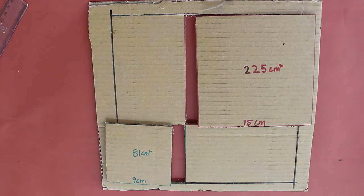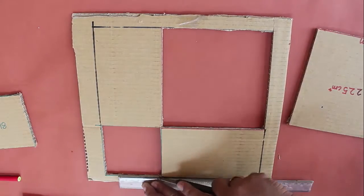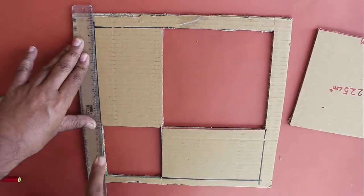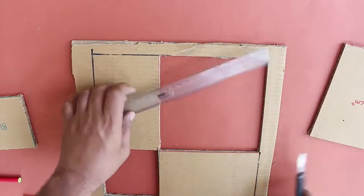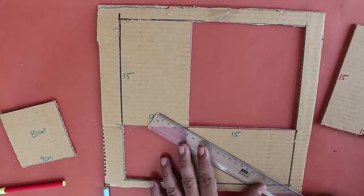After cutting the two large squares of 15 and 9 centimeter inside, we are left with two rectangles with sides 15 and 9 centimeters. Now we will cut these two rectangles in two parts, so now we have four triangles, all of which are right angle triangles.